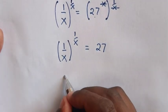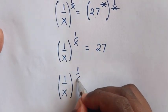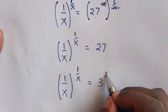Then 1 over x to the power of 1 over x equals 27, which is the same as 3 to the power of 3.